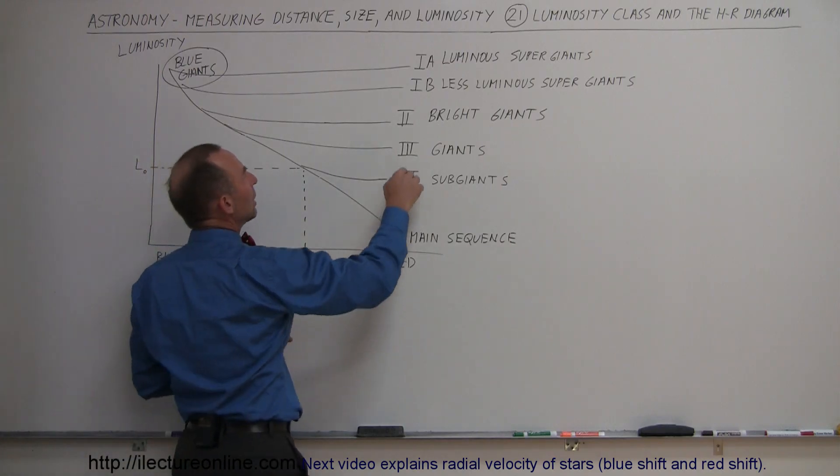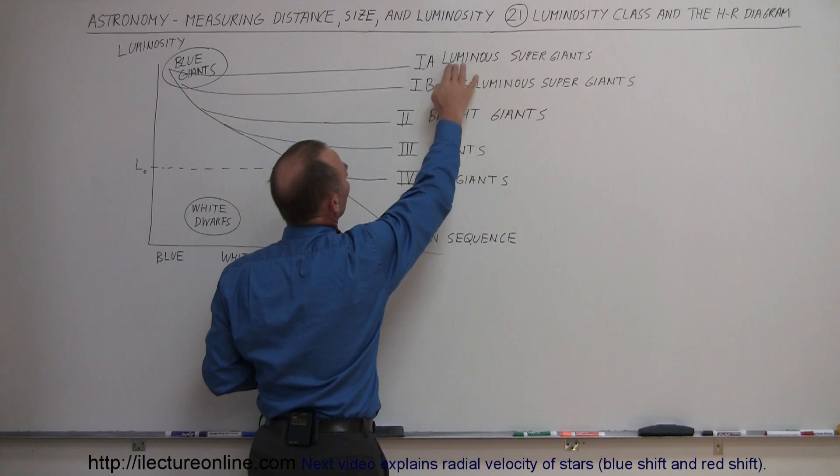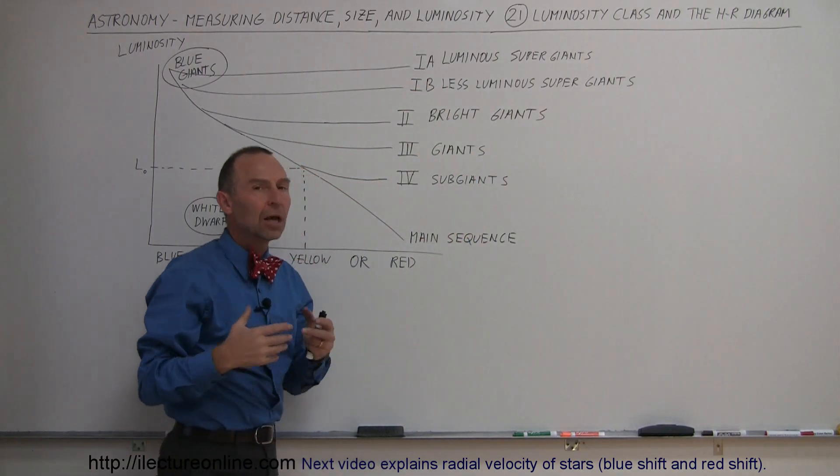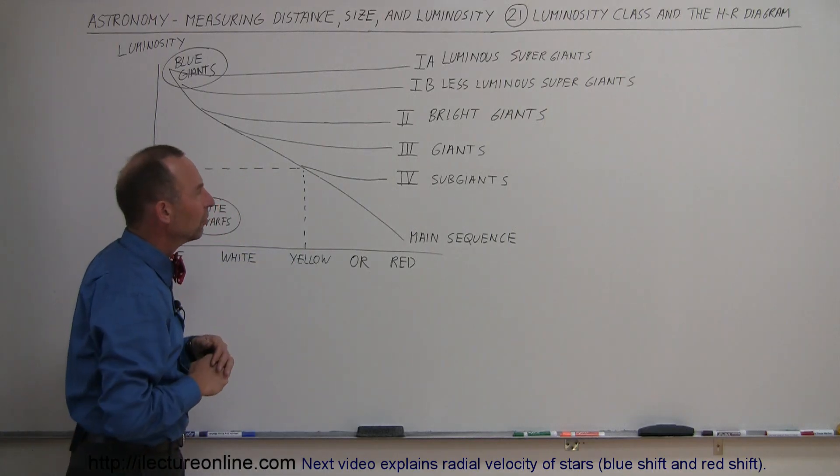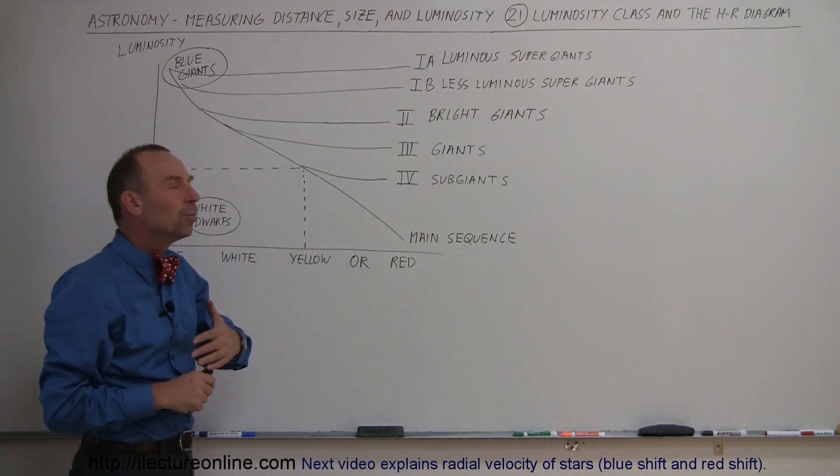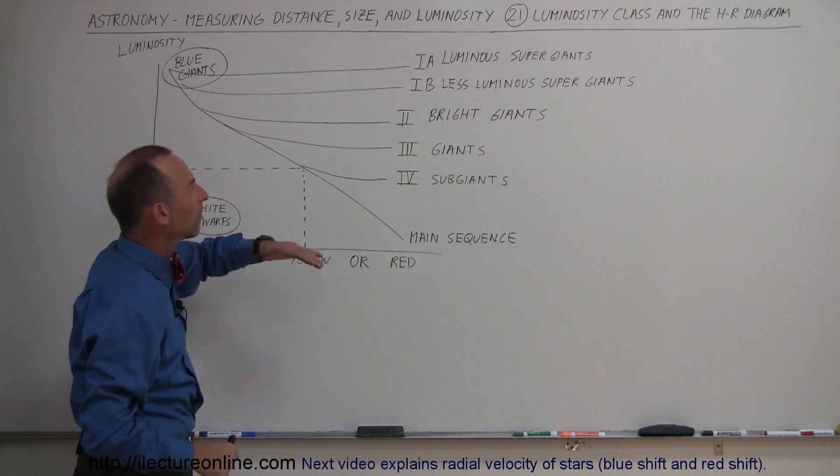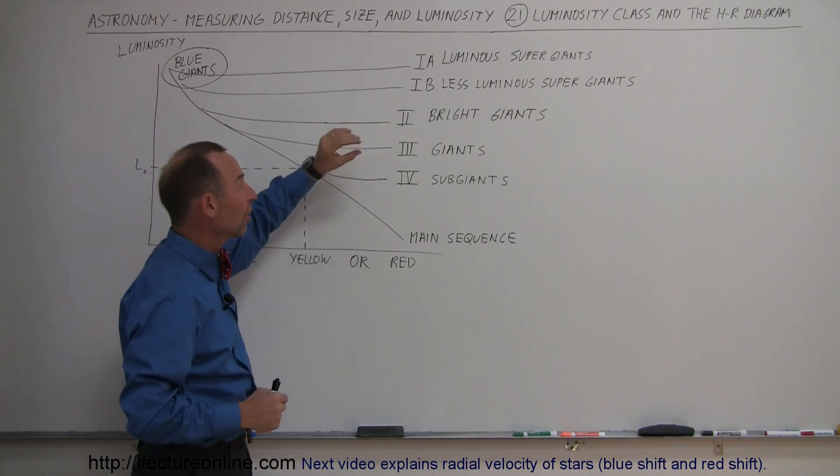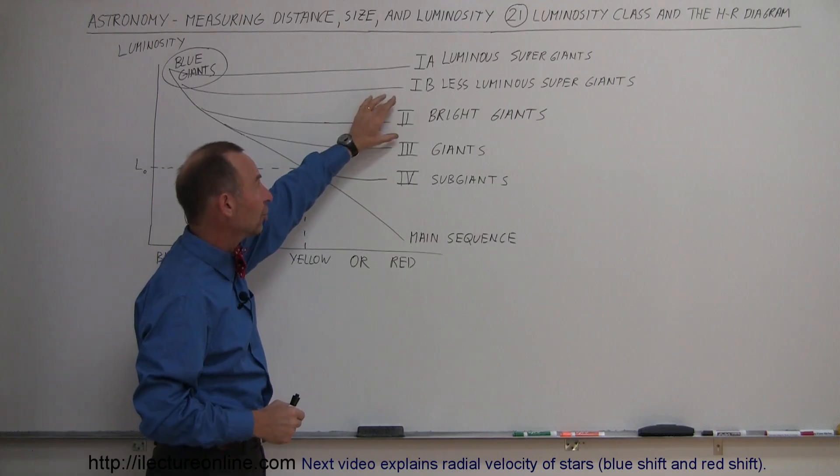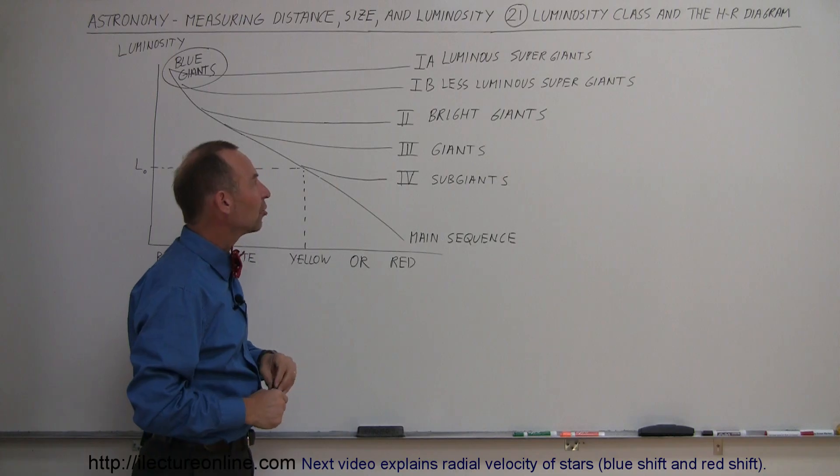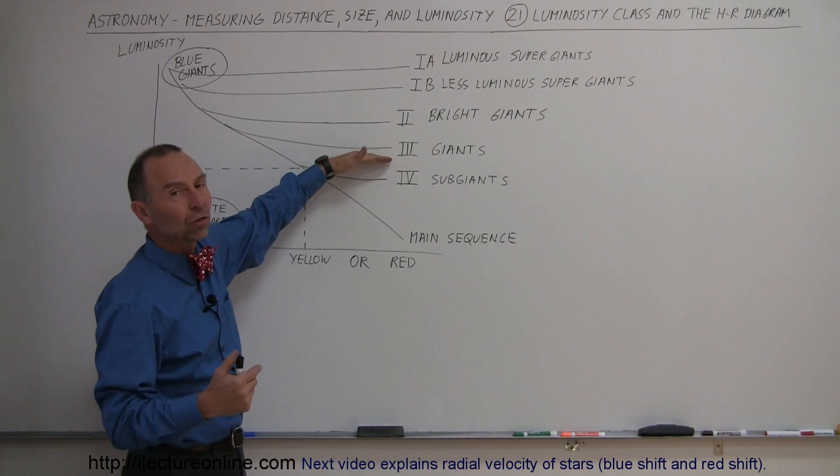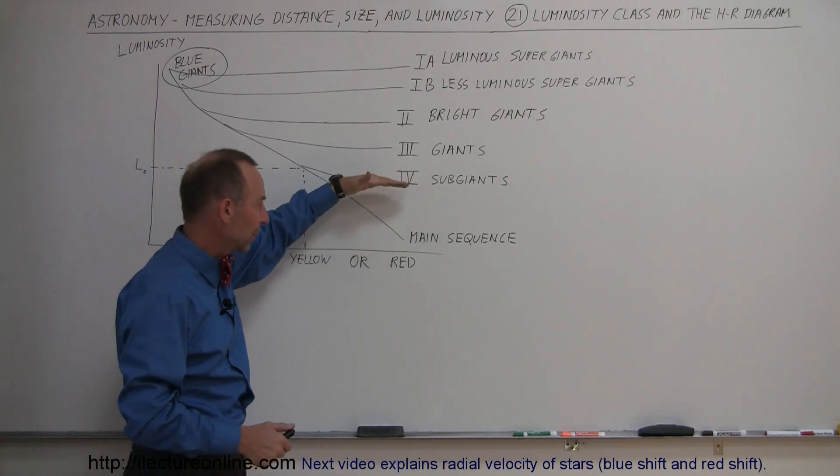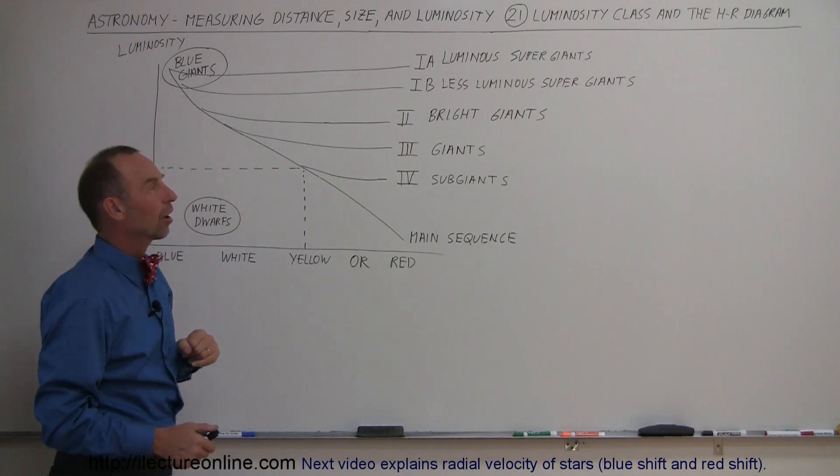And so the luminous super giants are the class 1A and the less luminous super giants are class 1B. So they're both classed as the super giant red giants. Then we have the bright giants, luminosity class 2. Then we have the regular giants, which is luminosity class 3. And finally the sub-giants, luminosity class 4, before we get to the main red sequence stars.